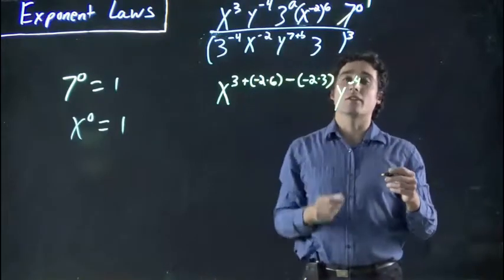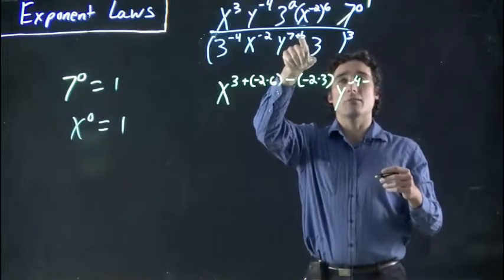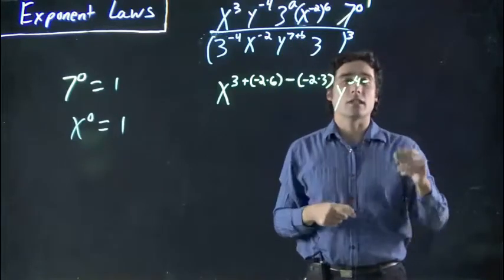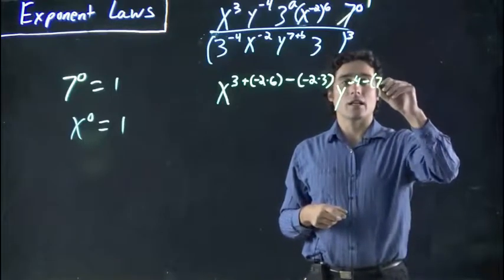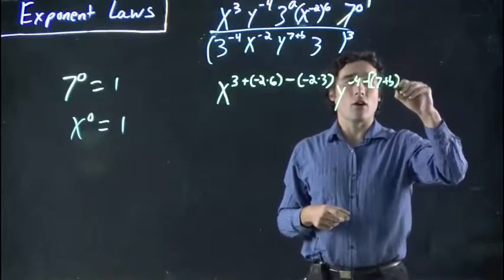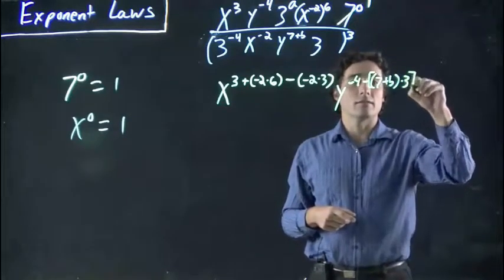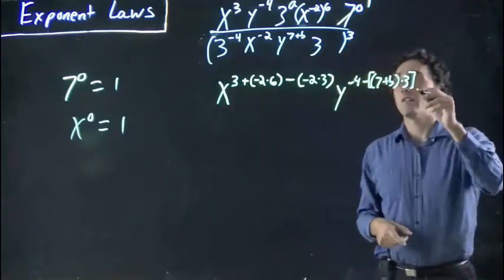And then again, we have 7 plus b to the 3. So it's subtracting 7, and I'm going to actually do 2 brackets, because 7 plus b all has to be multiplied by 3. And then we're subtracting it from there.